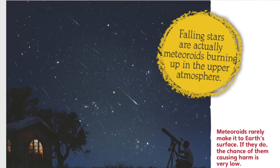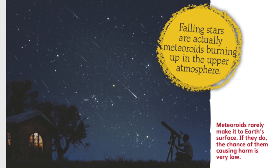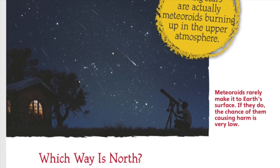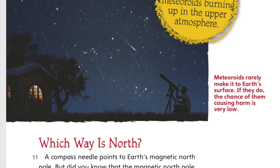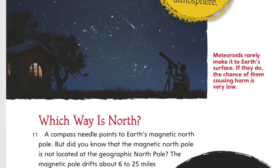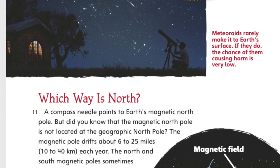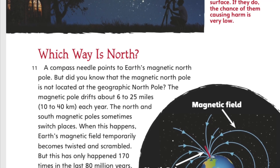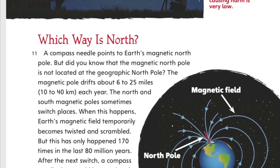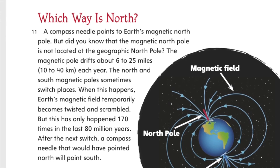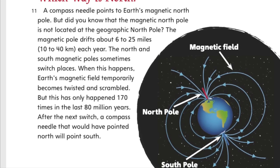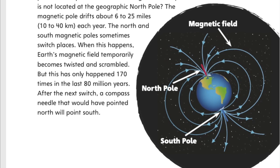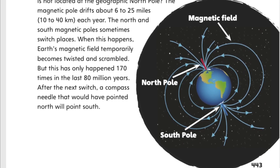Which way is north? A compass needle points to Earth's magnetic north pole. But did you know that the magnetic north pole is not located at the geographic north pole? The magnetic pole drifts about 6 to 25 miles each year. The north and south magnetic poles sometimes switch places. When this happens, Earth's magnetic field temporarily becomes twisted and scrambled. But this has only happened 170 times in the last 80 million years. After the next switch, a compass needle that would have pointed north will point south.